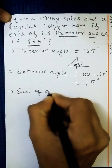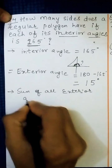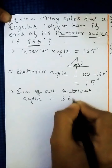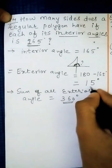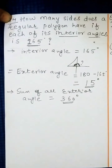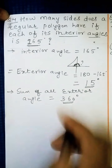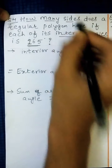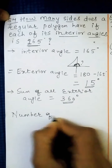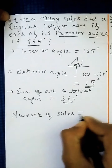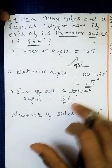The sum of all exterior angles is equal to 360 degrees — we have seen this in the previous video. We have the total of all exterior angles as 360 degrees, and we have one exterior angle that is 15 degrees. With these two values, we can now find the number of sides, which is what they are asking.